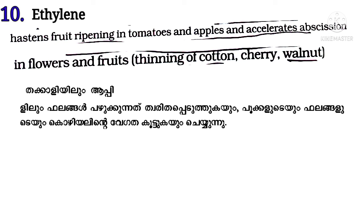Ethylene hastens fruit ripening in tomatoes and apples, and accelerates abscission in flowers and fruits — i.e., thinning of cotton, cherry, walnut, etc.